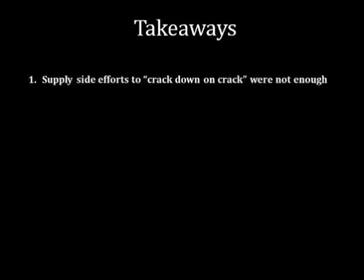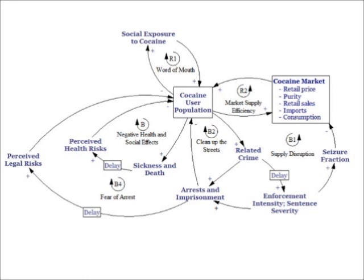This model was then used to analyze what was sustaining the cocaine market. Here's what the model found. First, it found that supply-side efforts to crack down on crack didn't really do too much. There's a saying that if you arrest two drug dealers, two more will pop up, and the data supported this. The supply-side efforts are represented in this model through the supply disruption loop and the clean up the streets loop, and these were the two loops that didn't do enough because ultimately cocaine user population still grew.